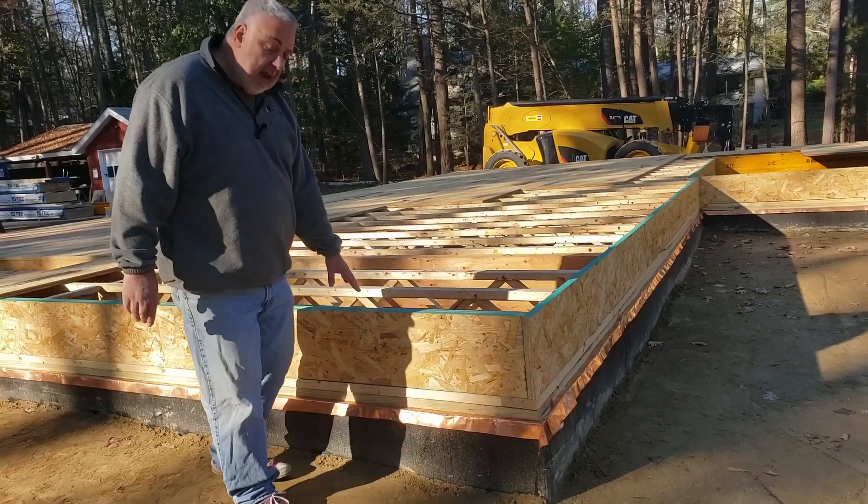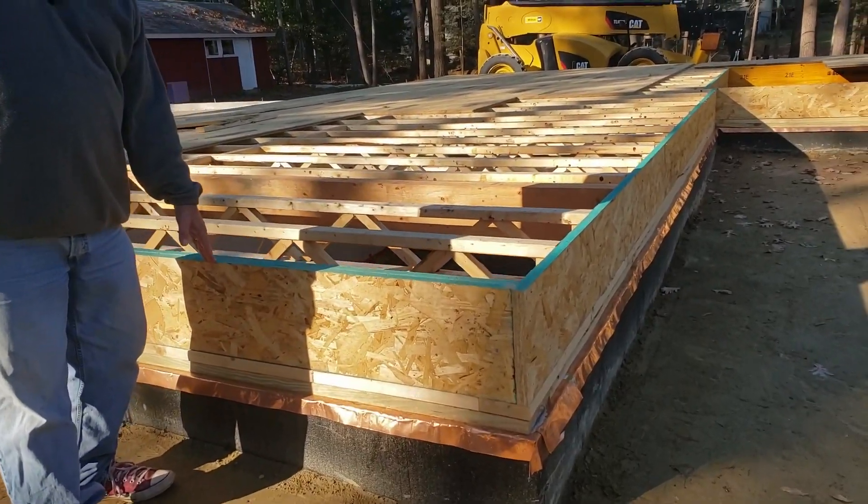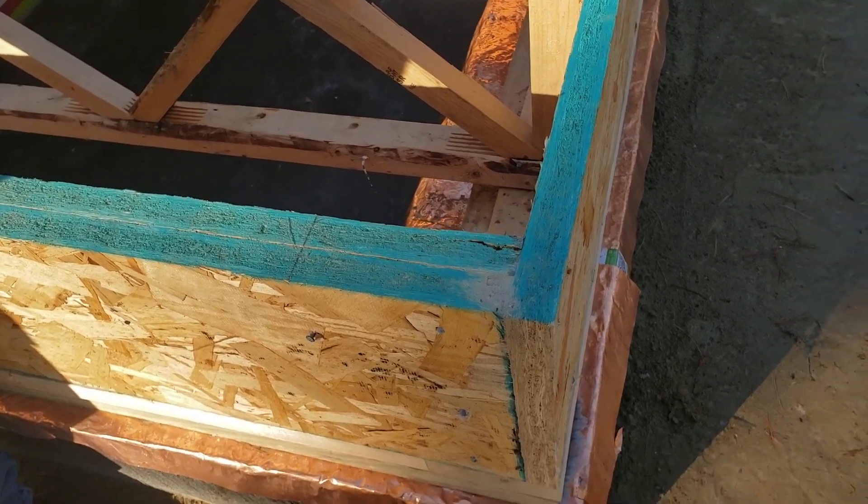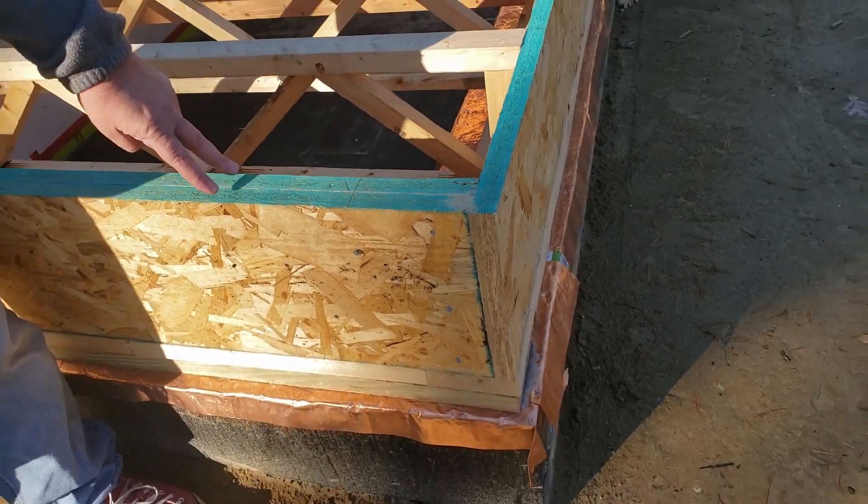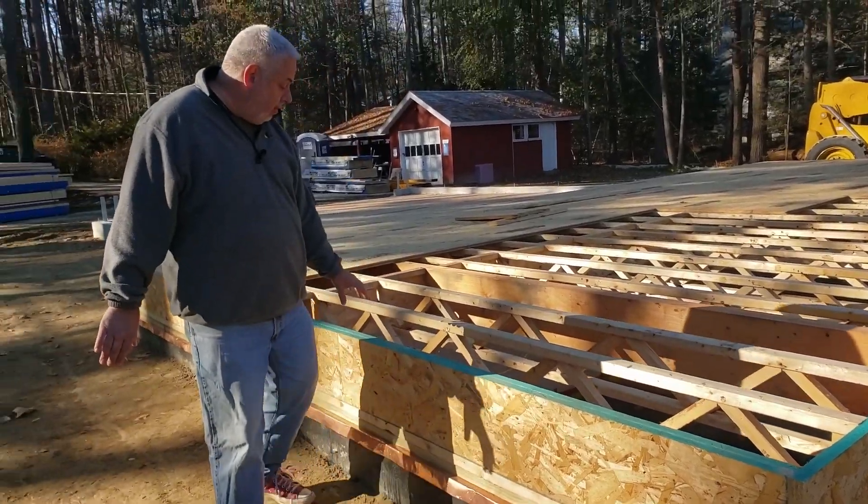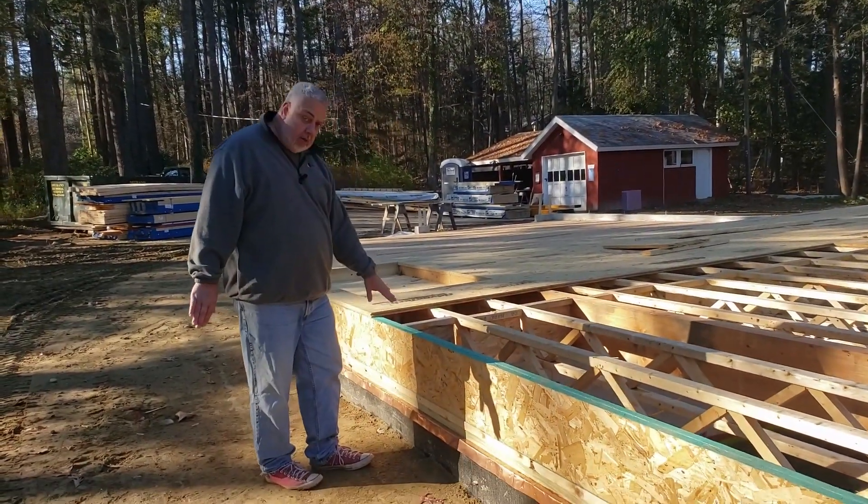And notice that along this line, we double it up. Right? So we have the single down there because the studs are going to sit on top of the trusses also. But here, where we don't have any truss work, we have that double joist coming in, or double band joist.